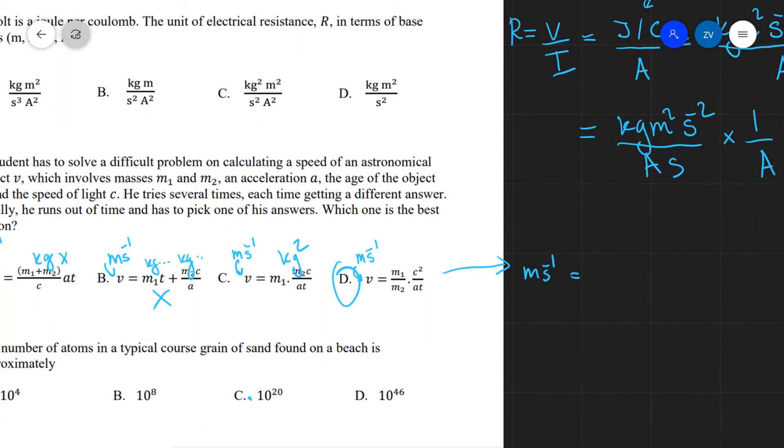The units on the right are going to be kilograms divided by kilograms times the units of c squared are m squared s to the power of minus 2, divided by acceleration, which is m s to the power of minus 2 meters per second squared, times the unit of time, which is seconds.